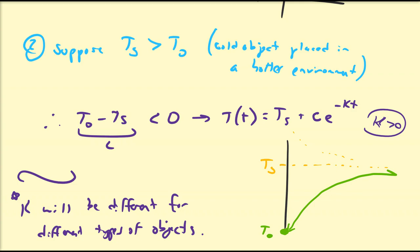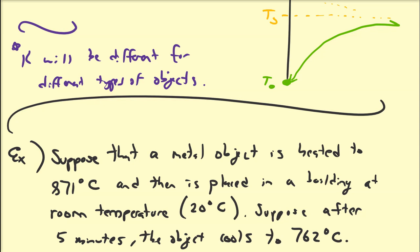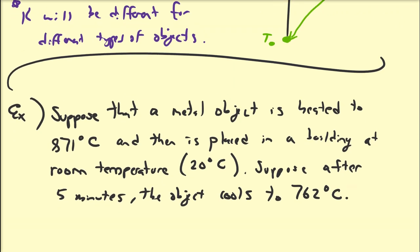I've gone ahead and wrote this problem down to illustrate Newton's law of cooling. Suppose that you have a metal object and you heat it up to 871 degrees Celsius — which is pretty hot, so don't touch things of that temperature — and then it's placed into a building at room temperature, which is approximately 20 degrees Celsius. After five minutes the object cools to 762 degrees Celsius. The value of K usually is not going to be known to you. In practice, in the experimental world, you need to measure the temperature it starts at — 871 — and then measure the temperature after some time has passed.